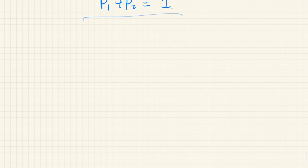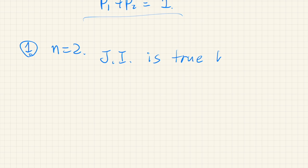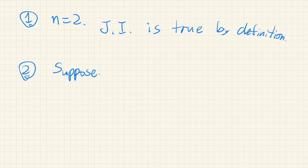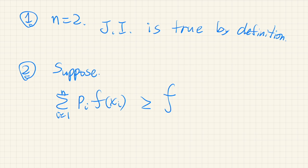Let's prove by mathematical induction. First, when n = 2, Jensen's inequality is true by the definition of convexity. Second, suppose we have Jensen's inequality for n points: the sum of p_i * f(x_i) is greater than or equal to f of the average of the points.